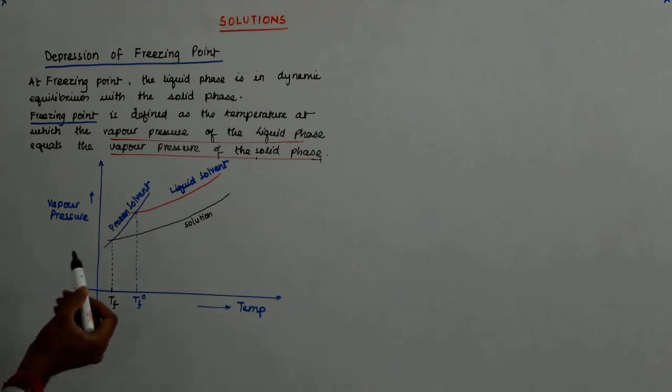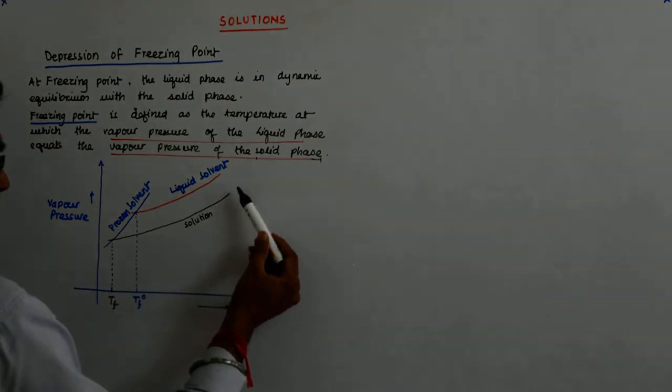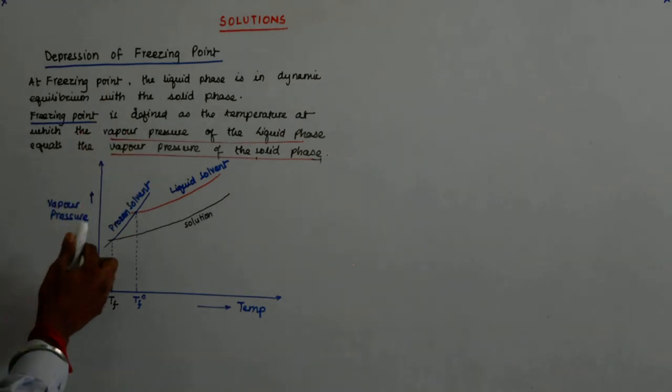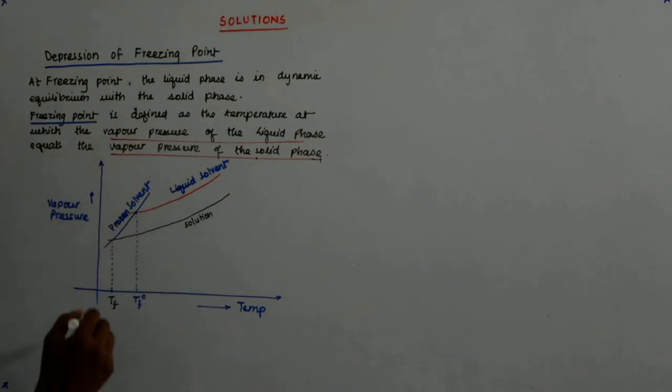So, every solid has a vapor pressure and it increases with temperature and every solid has a subliming ability. The rate of sublimation obviously goes up as you raise the temperature. So this is how. The moment the vapor pressure of our solution itself goes down, so what happens? They become equal. The frozen solvent and the solution, their vapor pressure becomes equal at a lower temperature Tf. At a lower temperature Tf. And this is the fall in the temperature.